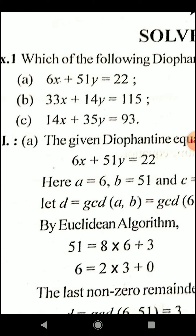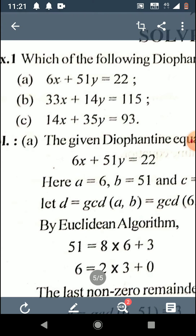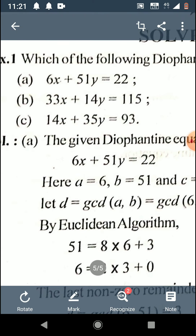For the third equation: 14x plus 35y equals 93. The GCD of 14 and 35 is 7. Since 7 does not divide 93, this Diophantine equation has no solution. The solution for part (a) has been explained; try to solve parts (b) and (c) on your own. Thank you.